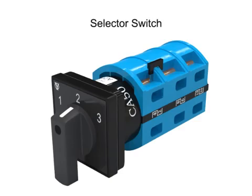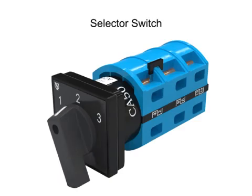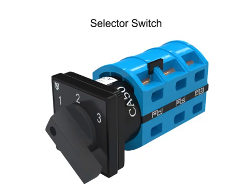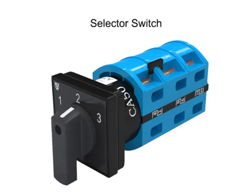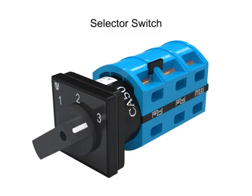A selector switch is a device with an operator that is manually rotated to activate electrical contacts. They are normally used to select either two or three different circuit conditions.